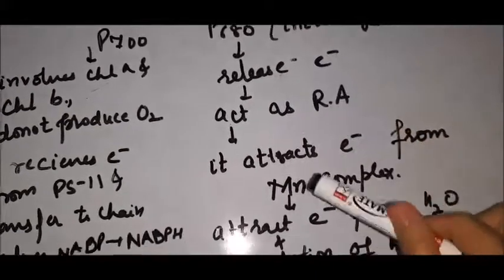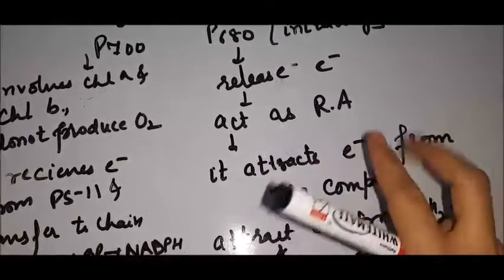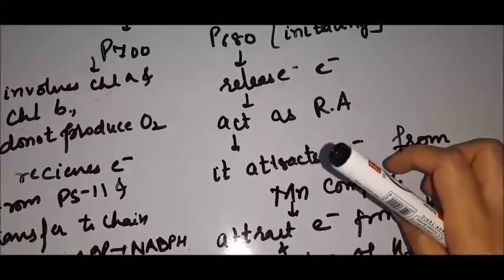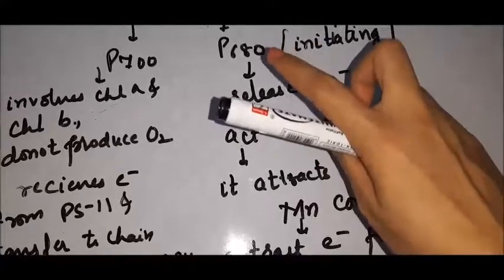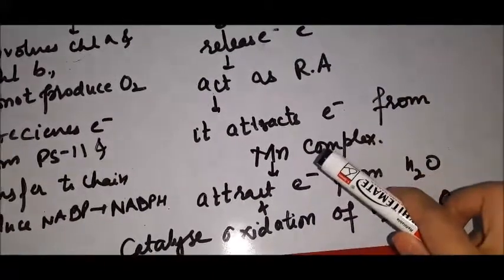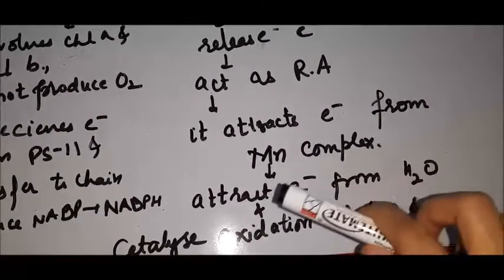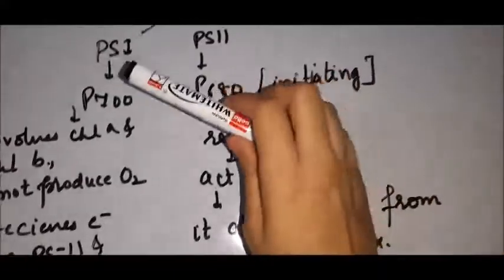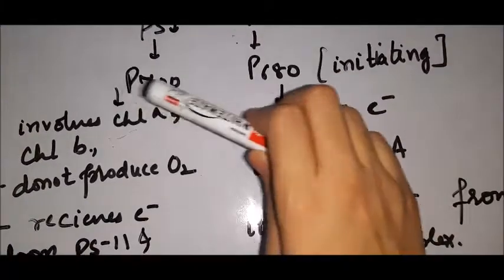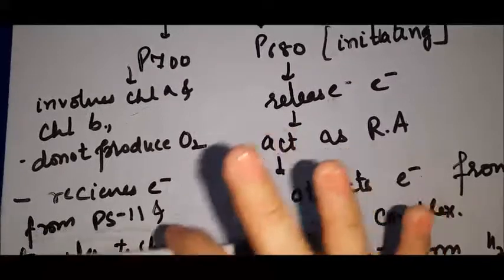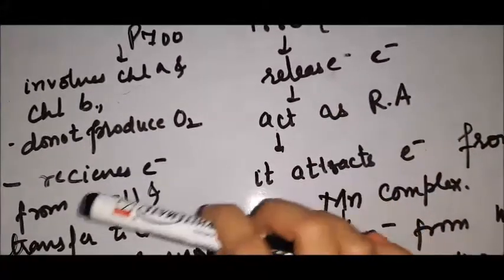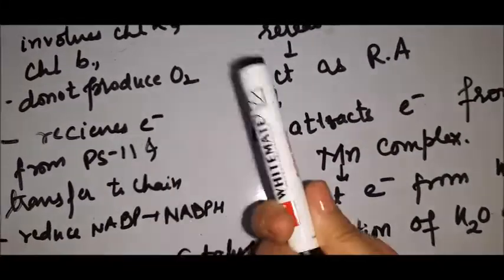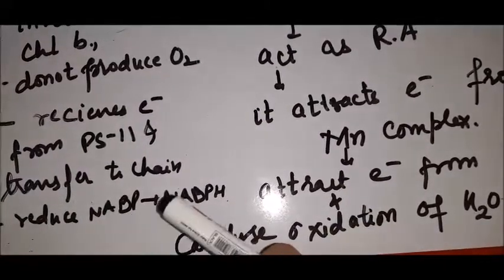The Mn complex at the active site is not the active site of chlorophyll but provides electrons to P680. The two processes of photosynthesis are: first, H2O is broken to give H⁺ and O2, with electrons donated from H2O to P680. P680 catalyzes the oxidation of H2O. P700 (chlorophyll A and B) does not produce O2 but receives electrons from PS2, transfers them through the chain to reduce NADP⁺ to NADPH.